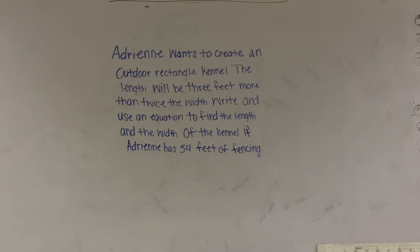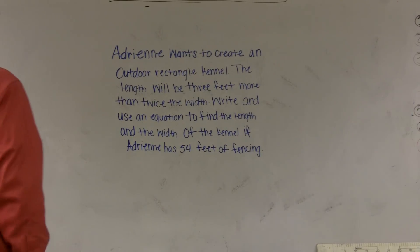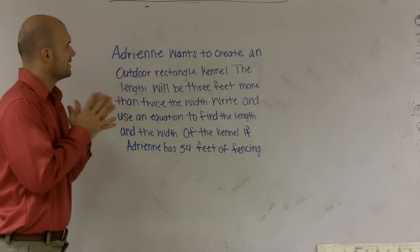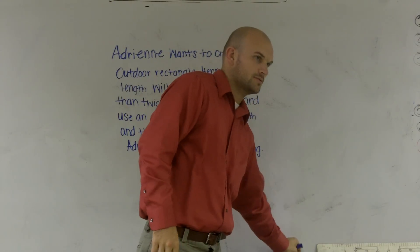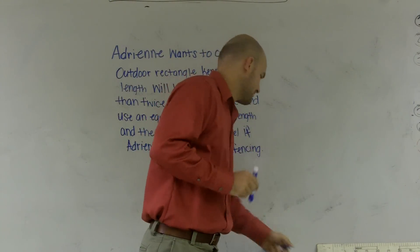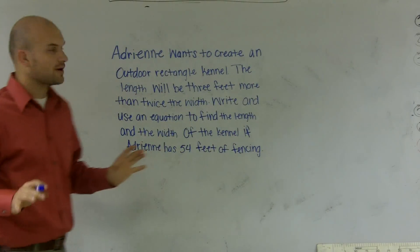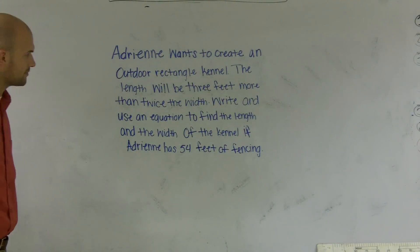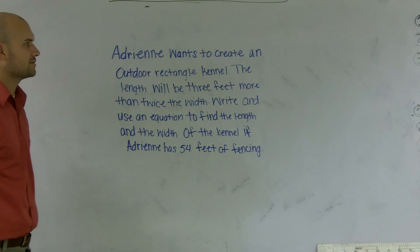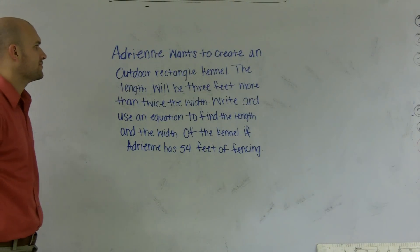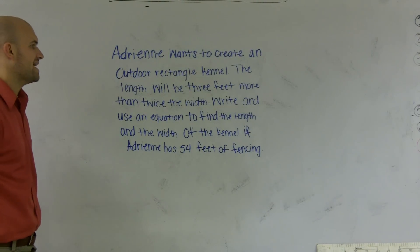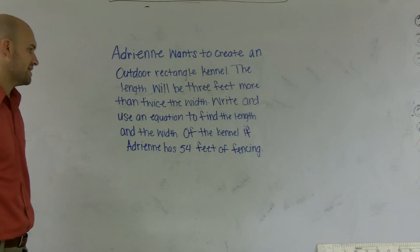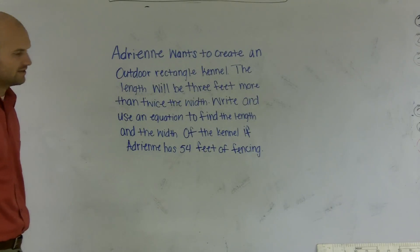How to solve a word problem. Part 1. First thing about doing a word problem is we want to make sure we read all the way through the problem. It says: Adrian wants to create an outdoor rectangle kennel. The length will be three feet more than twice the width. Write and use an equation to find the length and the width of the kennel if Adrian has 54 feet of fencing.